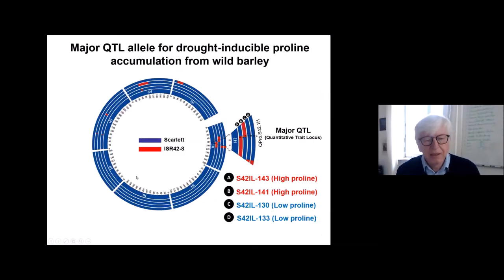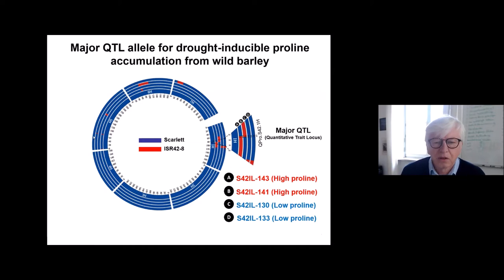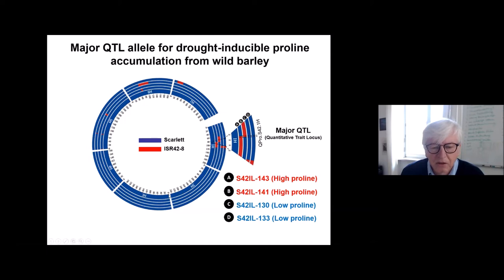We then used the information that proline might have an effect on drought stress, and tested these introgression lines for increased proline content. Here I will show the outcome for four of these lines. In the circular chromosome diagram, blue segments represent Scarlett and red fragments represent segments from our wild form.